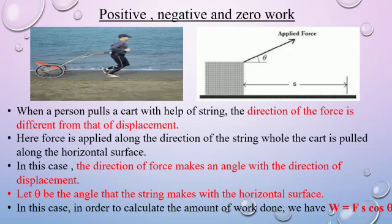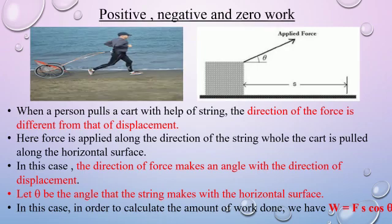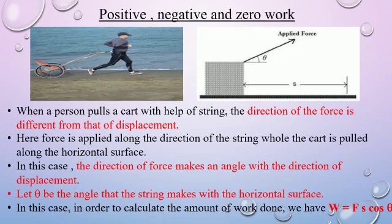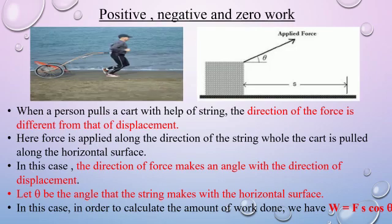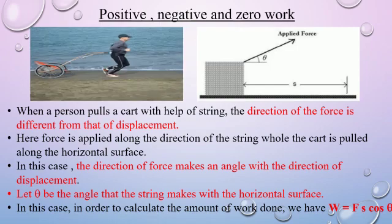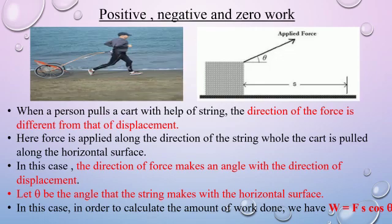As you can see in the first picture, a person is pulling a cart with the help of a string. Here, the direction of the force is different from that of displacement. Force is applied along the direction of the string while the cart is pulled along the horizontal surface. The direction of the force makes an angle with the direction of displacement. Let theta be the angle that the string makes with the horizontal surface. Work done in such a case can be calculated using the formula W = Fs cos θ.